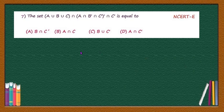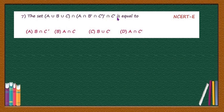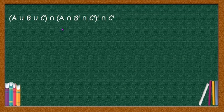The question is: the set (A ∪ B ∪ C) ∩ (A ∩ B' ∩ C')' is equal to what?